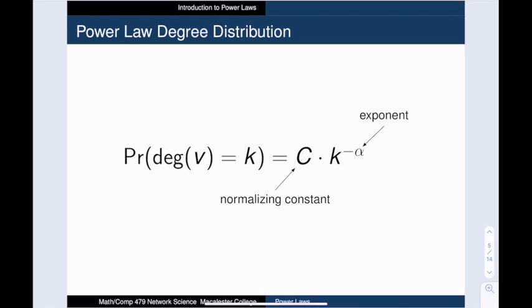Now we must multiply the k to the minus alpha term by some normalizing constant c. This is because the probabilities have to sum to 1 in order for this to be a probability mass function.